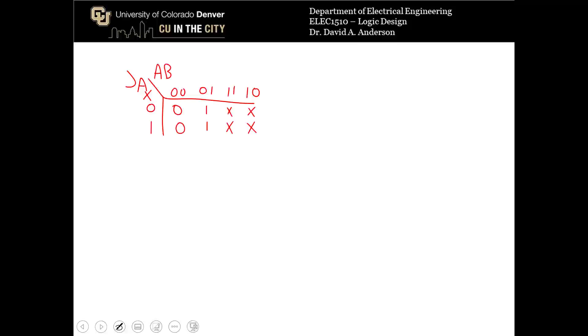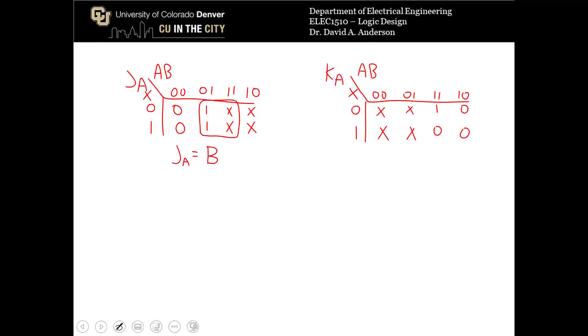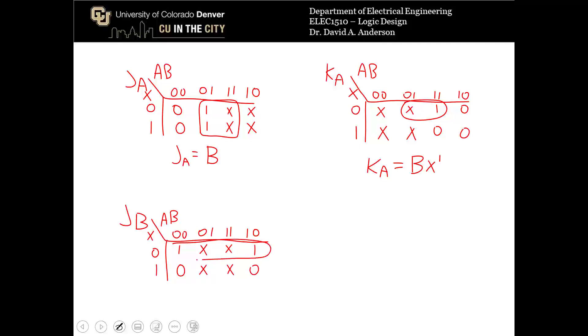Now we derive functions using K-maps for all J and K inputs. For J_A, the K-map gives the simple function J_A = B. For K_A, the K-map gives K_A = BX'. For J_B, the K-map gives J_B = X'.